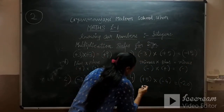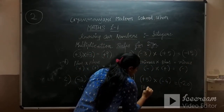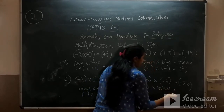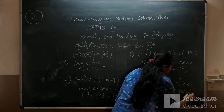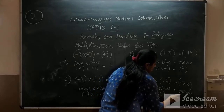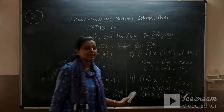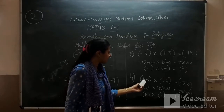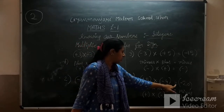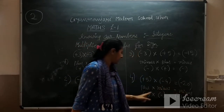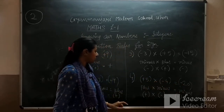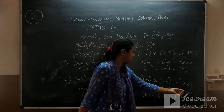The fourth rule: plus into minus will result in a minus integer. In symbolic form, plus into minus equals minus. For example, plus 5 into minus 4 will be minus 20 — five fours are 20 and that will be negative 20. The formula is plus into minus will be minus.